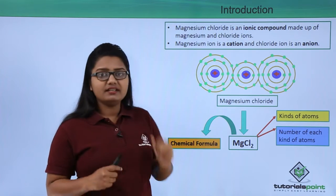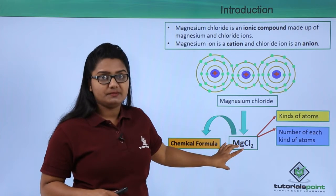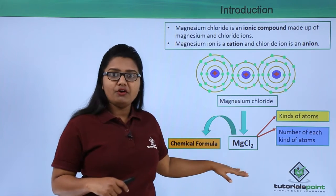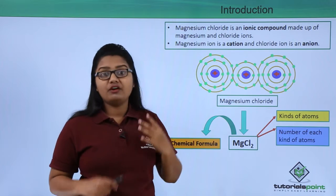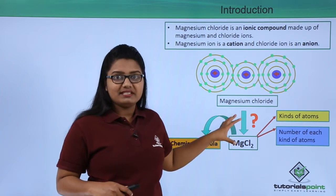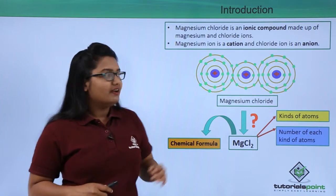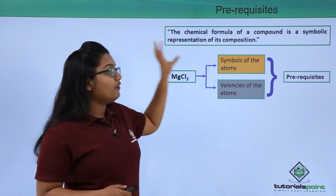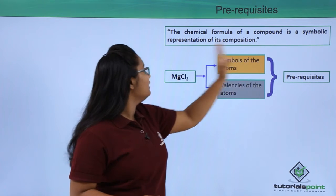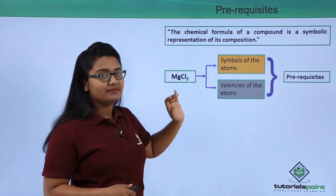The question here is how to move from a chemical name to a chemical formula — that is, how to write a chemical formula from the name of a compound. This is the question we are going to address in this video. A chemical formula is defined as the symbolic representation of a compound's composition.